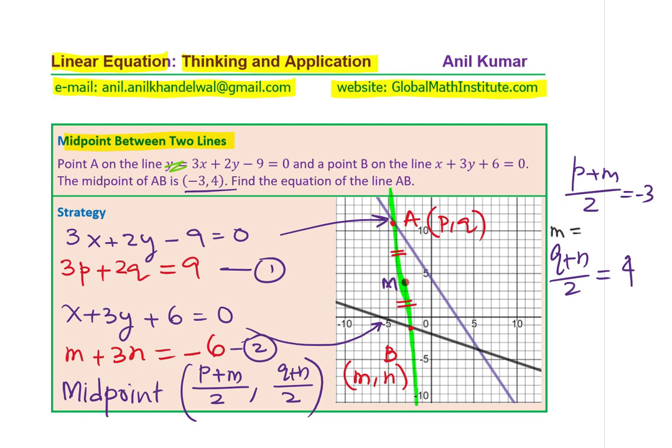What is M equal to? Well, M is 2 times -3, which is -6. Taking P on the other side, we get M = -6 - P. Similarly, we can isolate N, which would be 8 minus Q.